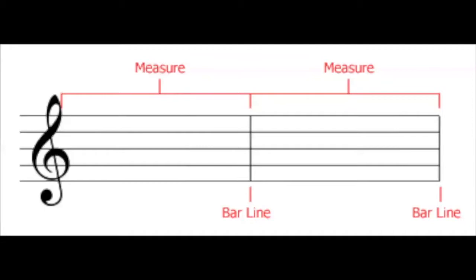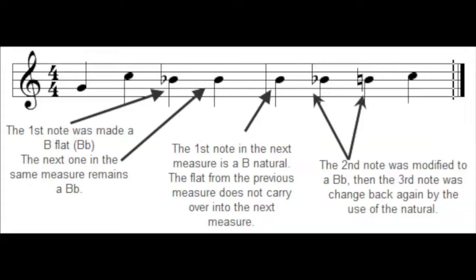Music is notated utilizing measures, each of which are separated with the use of a bar line. Now let's look at how bar lines affect accidentals. When you introduce an accidental into a measure, it affects all of the other notes on the same line or space until the end of that measure.